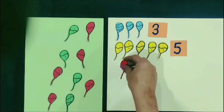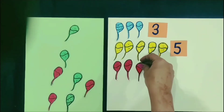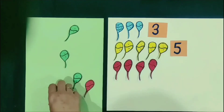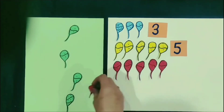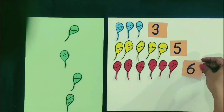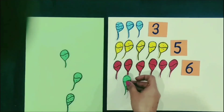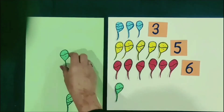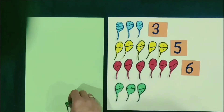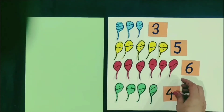Now, we see how many balloons are of red color. One, two, three, four, five, six. Six balloons. Now, we see how many balloons are of green color. One, two, three, four. Four balloons are of green color.